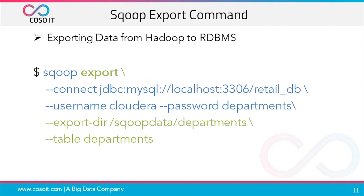Now the Sqoop export command. It is used to export data back to data stores like MySQL. So we get the data into Hadoop, analyze it, and then export it back to the data stores. In this command we use the export parameter, then we also specify the --export-dir parameter — the path of the directory from which we want to export the data — and then the table name which should be present in our database where we want to export the data to.